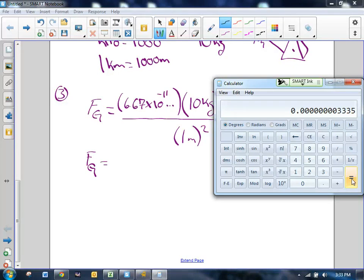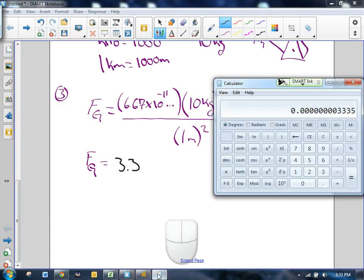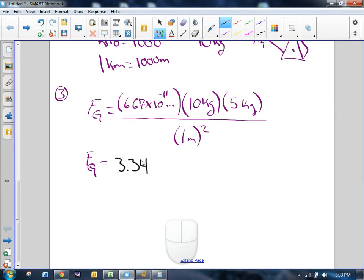And that's a really small number, so we're going to have to put that in scientific notation. Looks like we've got to move this 1, 2, 3, 4, 5, 6, 7, 8, 9 times to get the decimal to where we want it to be. 3.335, and we'll always just cut it off at the hundredths place, times 10 to the negative 9th newtons. There's your answer for that problem.